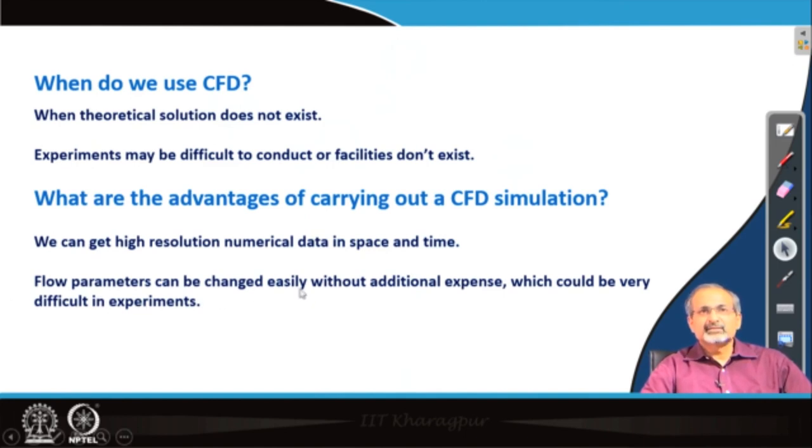Additionally, flow parameters can be changed easily without additional expense which could be very difficult in experiments for example. Let us say you have an experimental facility where the maximum speed with which you can operate the facility is restricted by a certain value. You would not be able to generate data anyway beyond that velocity. However, it is very simple most often to do it through a CFD exercise.